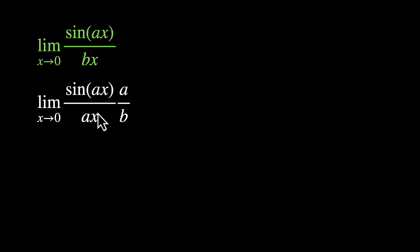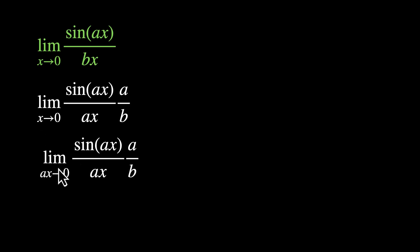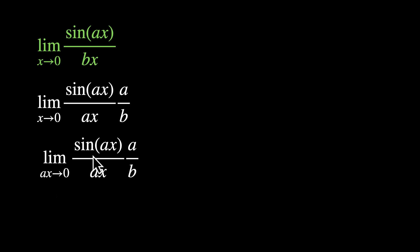Now the limit should also match. We have x approaches 0. When x is approaching 0, any multiple of x will also approach 0. So ax will also approach 0. We can write this as limit ax approaches 0, sin(ax) / ax, times a/b. Bringing the constant a/b out, we have limit theta approaches 0, sin(theta) / theta. That becomes 1. So the answer is a/b.